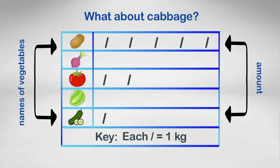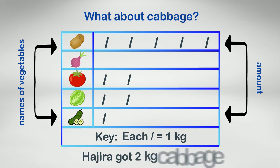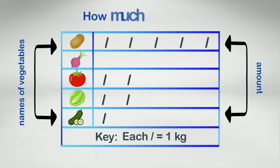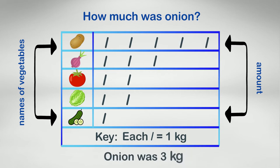What about cabbage? One and two. Hajra got two kg cabbage. And how much was onion? One, two, three. Onion was three kg.